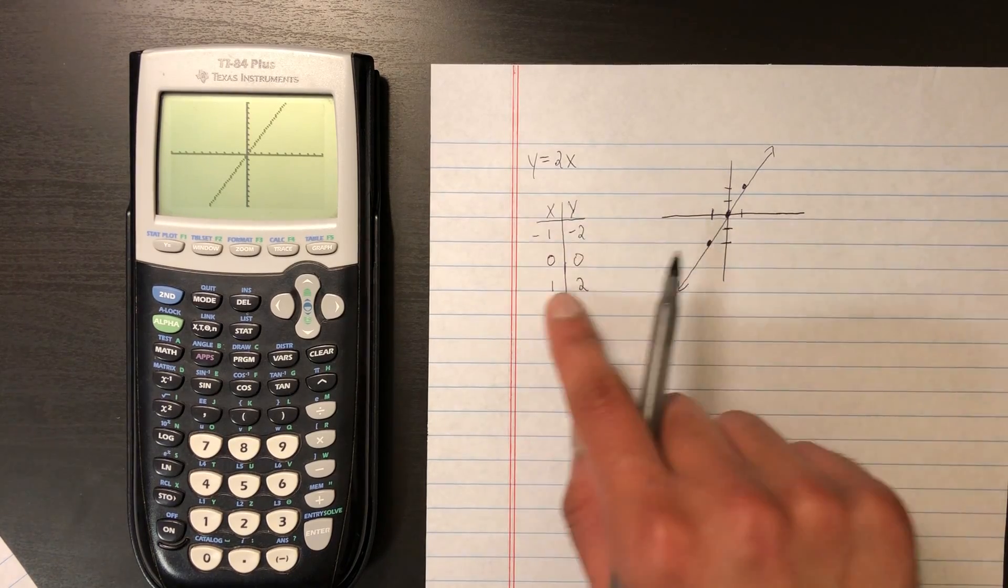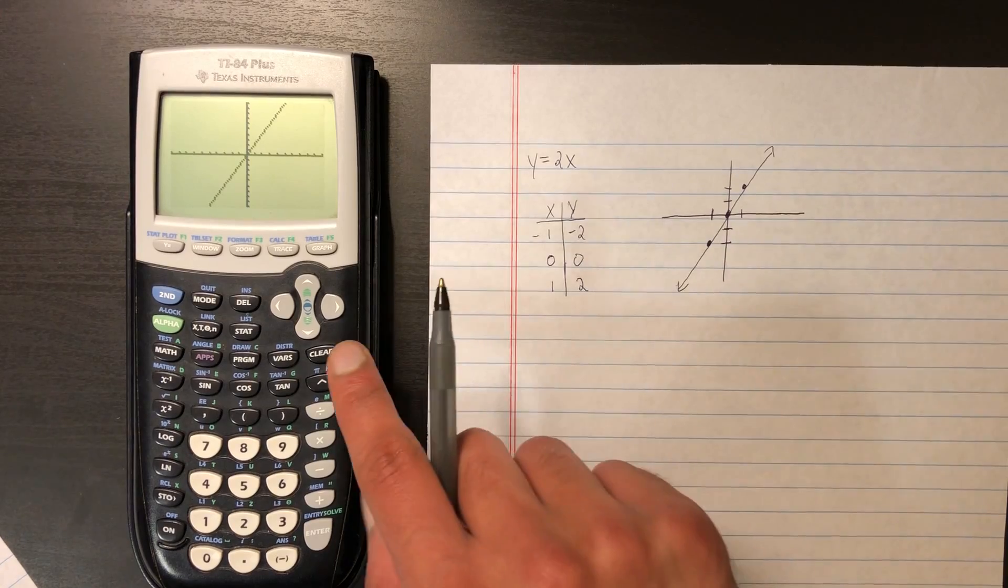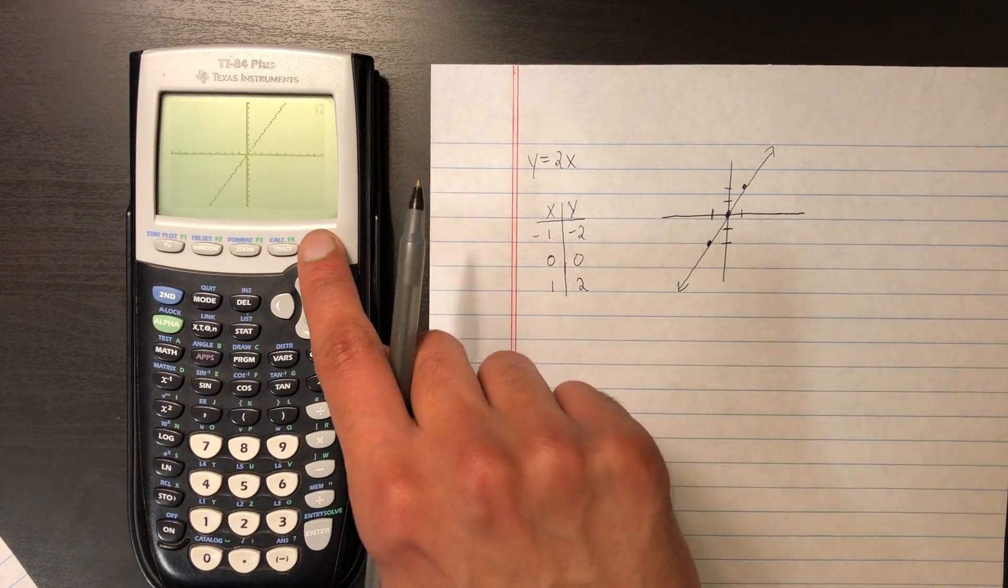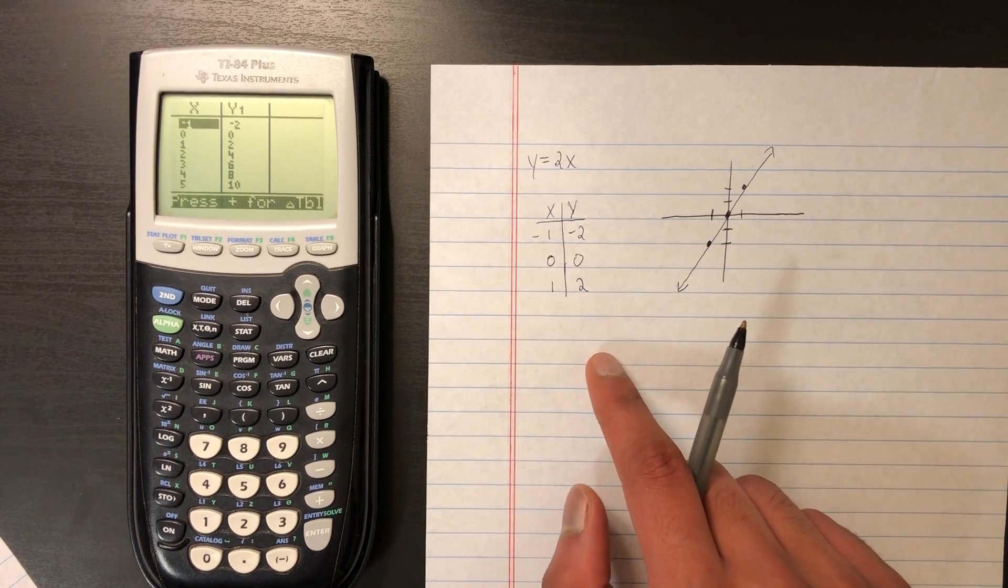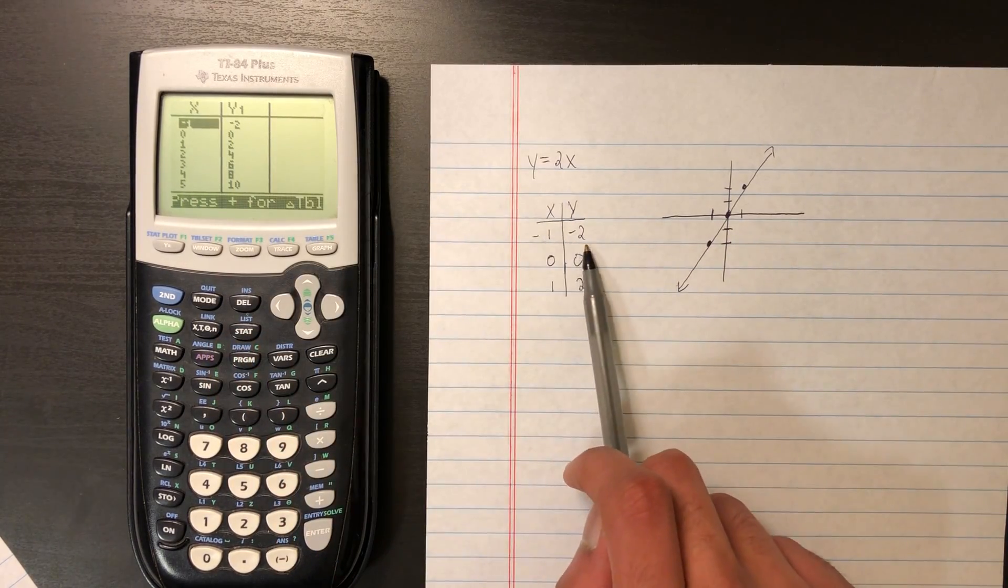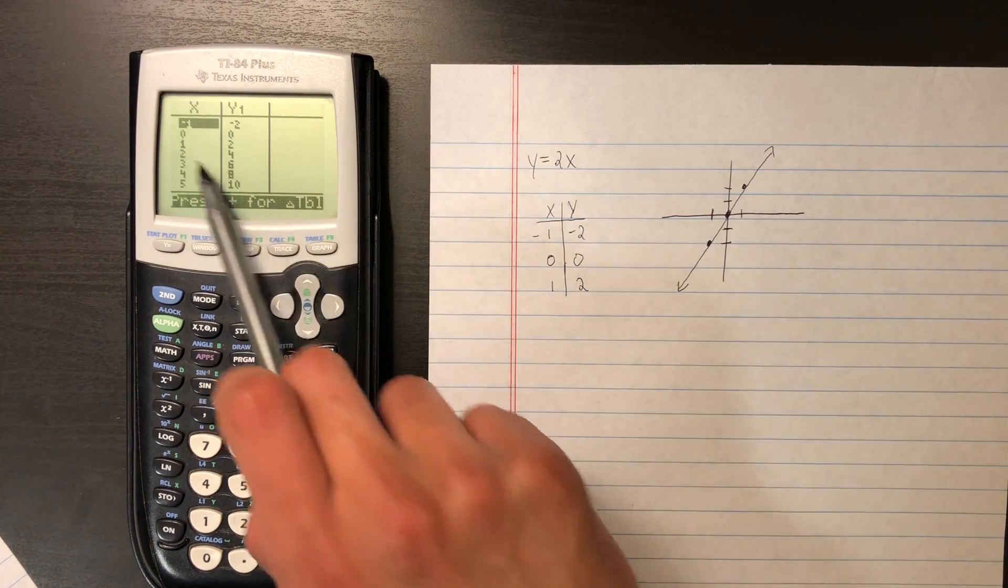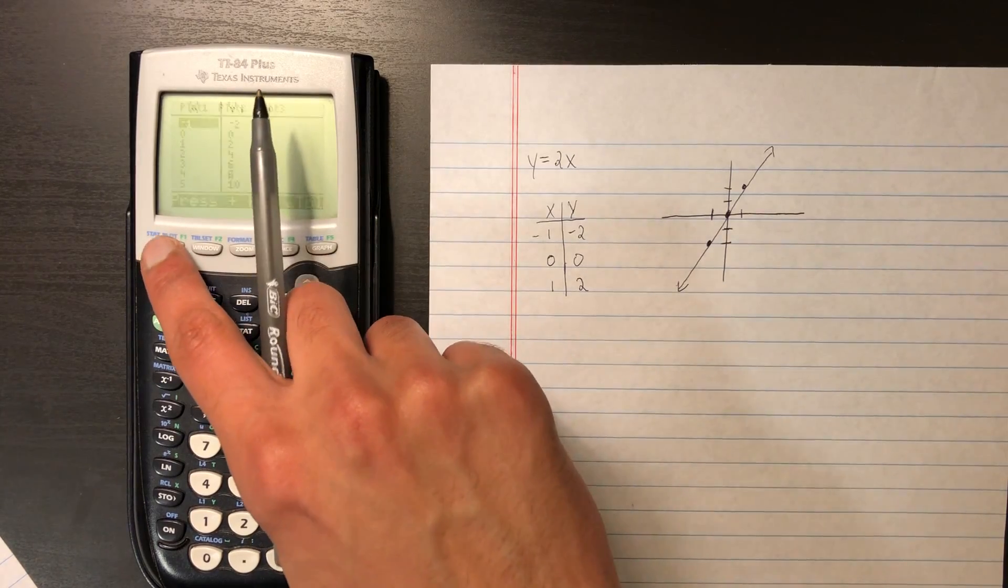And if we want to see the table values on the graphing calculator, all you have to do is hit 2nd table. And then let's match up the values. So negative 1, negative 2; 0, 0; 1, 2. And the same values show up on the graphing calculator. Awesome.